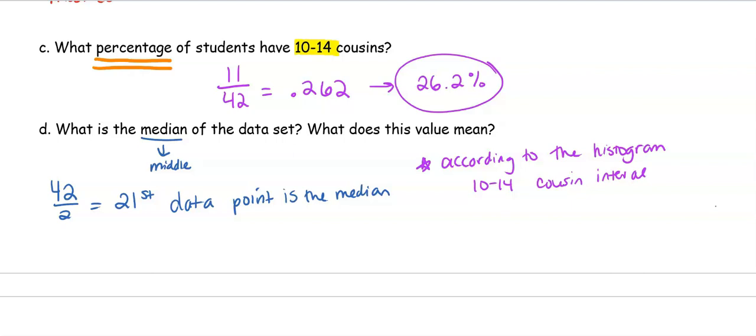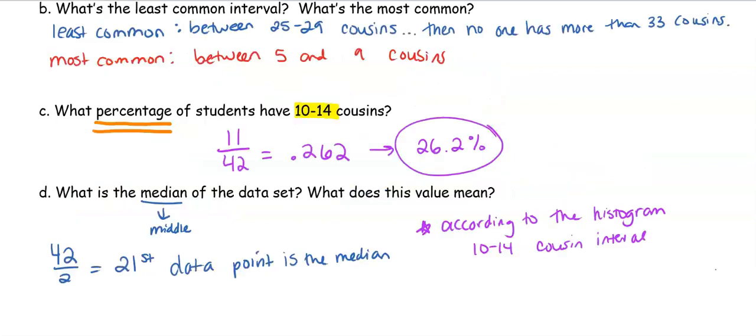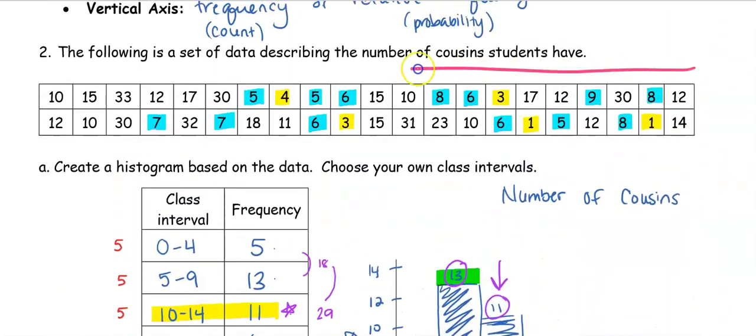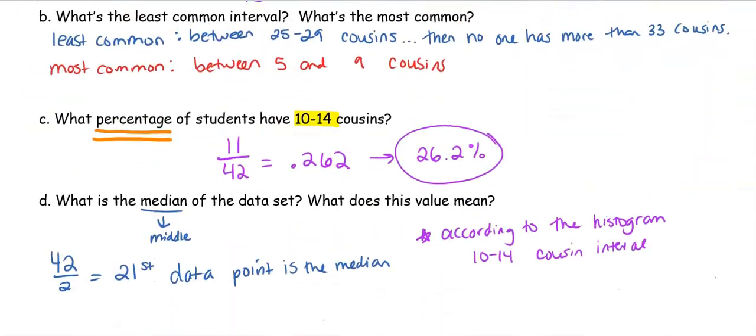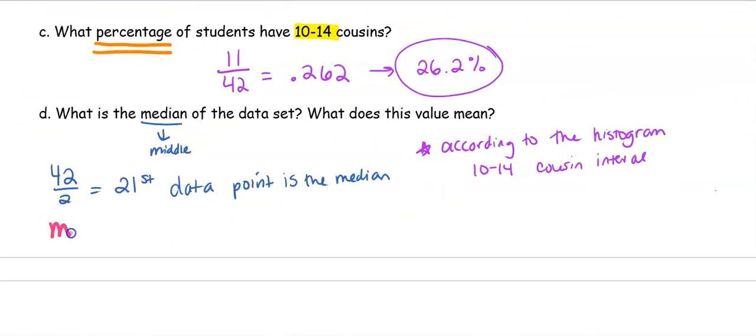So according to the histogram, that's going to happen within 10 to 14 cousin interval. Now if you were only given the histogram, that would be as specific as you could possibly get. But this isn't always going to happen. If we look here, we have all of the data. So if I were to go back to the original data, which most of the time you don't have, you just have the histogram, if you calculate the median of all the data, the median is actually at 10. But again, so you can look at it from two different directions. If you look at it from the histogram, you're looking for the 21st data point, which is going to happen within that interval of 10 to 14.